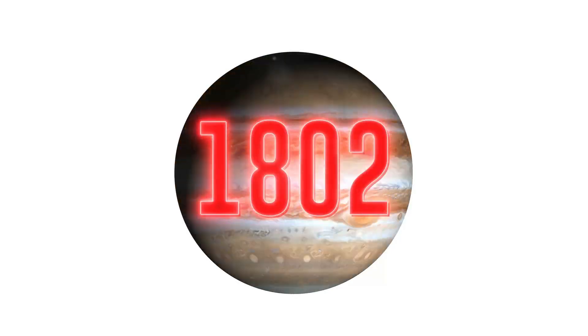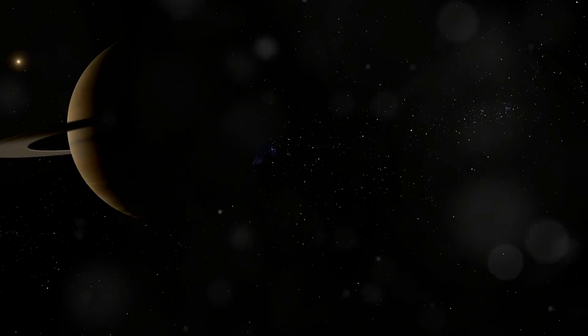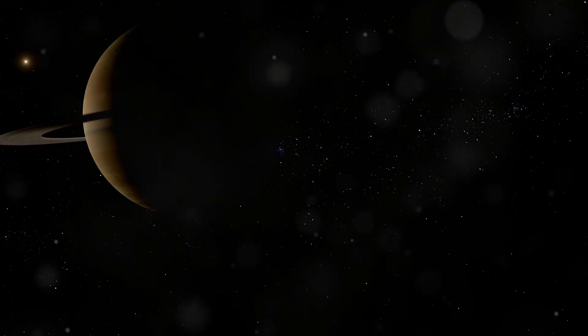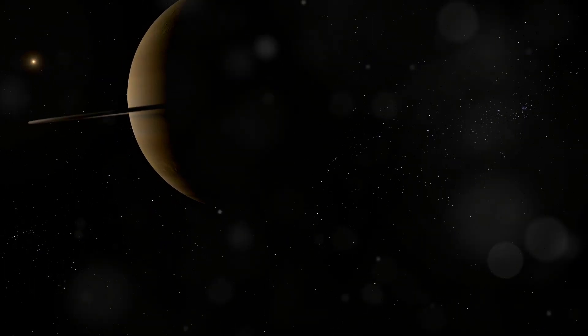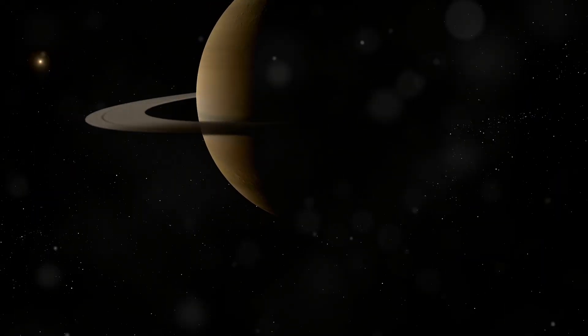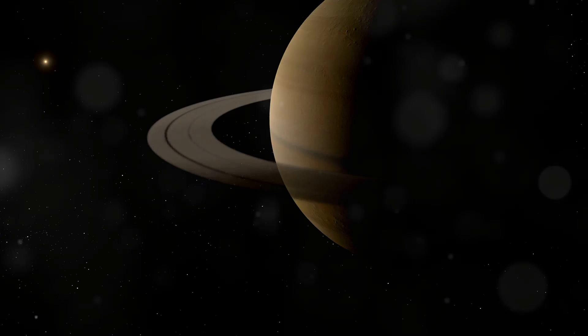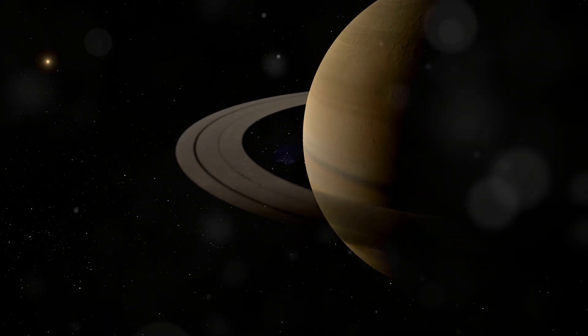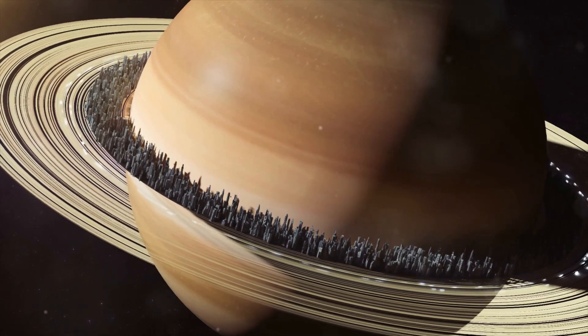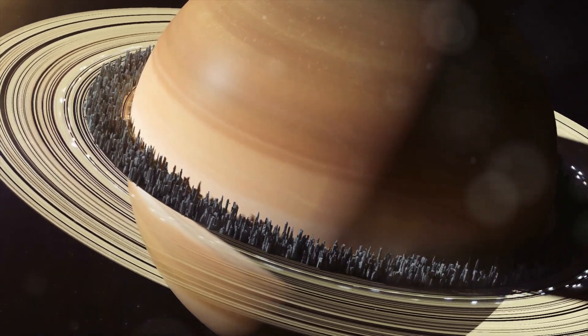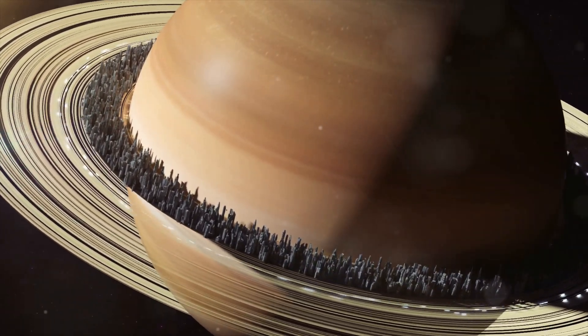Saturn: You can easily recognize this planet because of its beautiful rings. These rings are made up of countless ice and rock particles, ranging in size from tiny grains to massive boulders. They are one of the most spectacular features in our solar system.